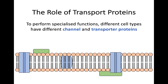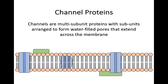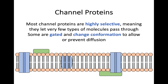Both of these are going to allow the facilitated diffusion of molecules from one end to the other of the cell membrane. Channel proteins are multi-subunit proteins with subunits arranged to form water-filled pores that extend across the membrane — really, all it means is these are transmembrane proteins that have a pore, almost like a tunnel running from one end to the other that molecules can go through to cross from one side of the membrane to the other. Now these channel proteins are very highly selective, meaning that only some types of molecules can pass through them.